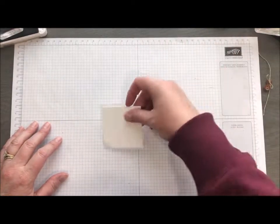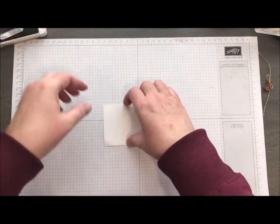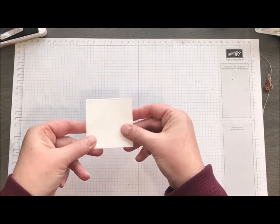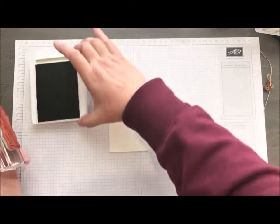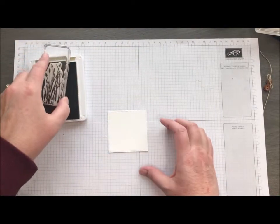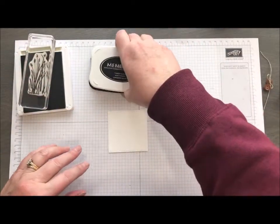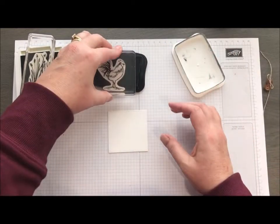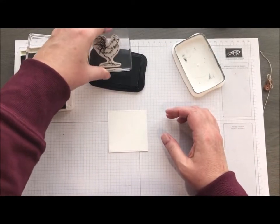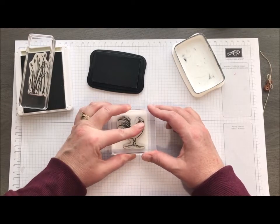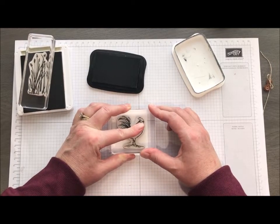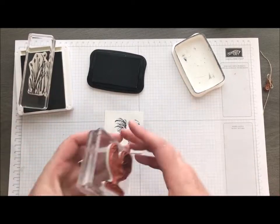I'm going to start off with a piece of Whisper White. This is actually cut ahead of time with our Stitched Shapes Framelits. Let me back up a second. I'm going to do our rooster first. So I am going to stamp him in Memento Black and I wanted to do him a little off to the side so he's not exactly in the middle of the card.